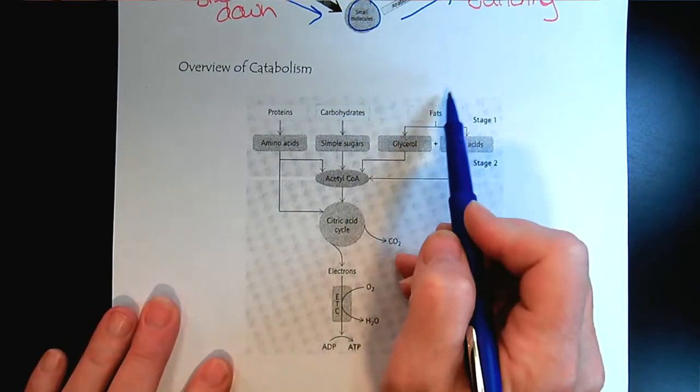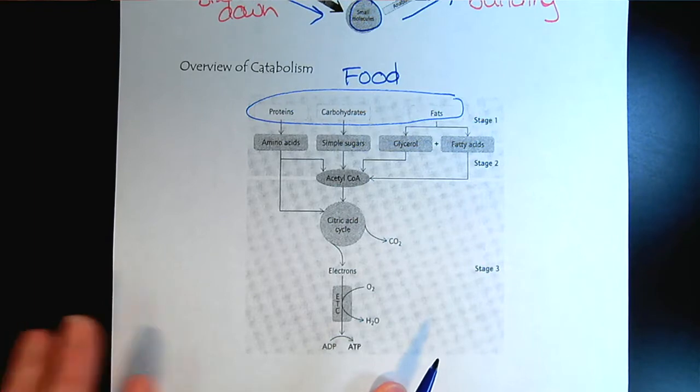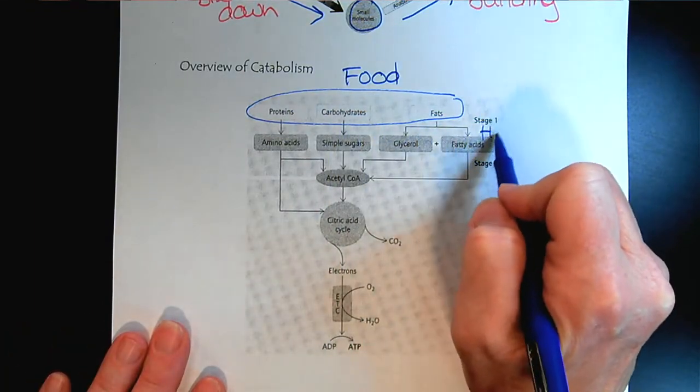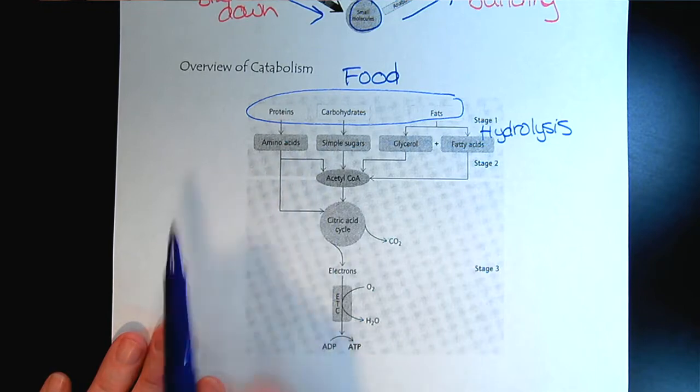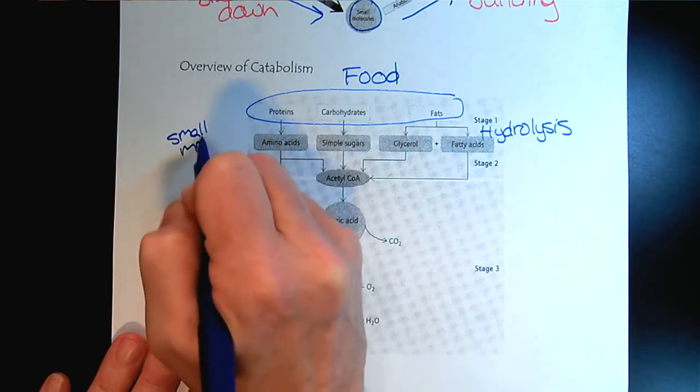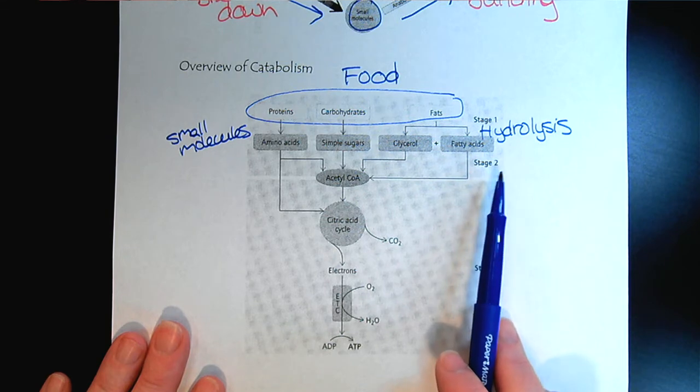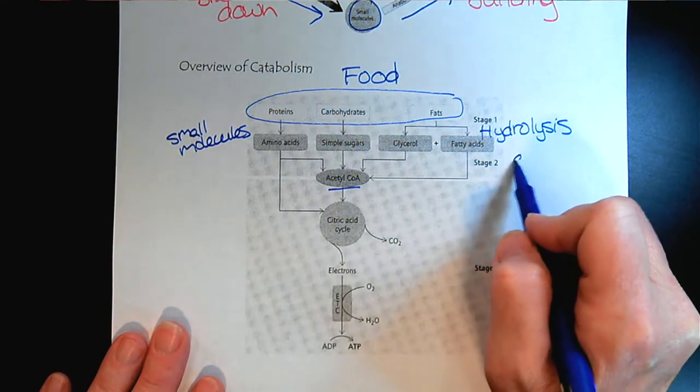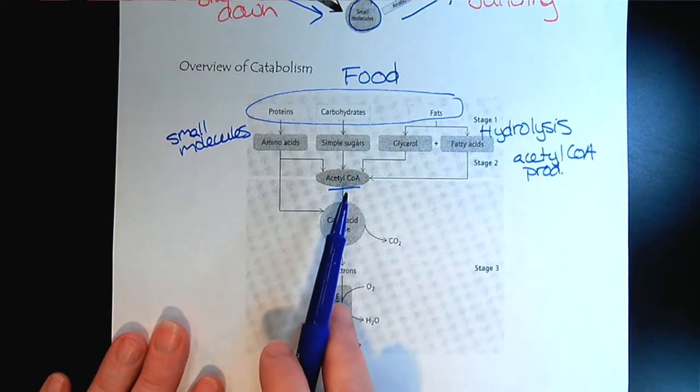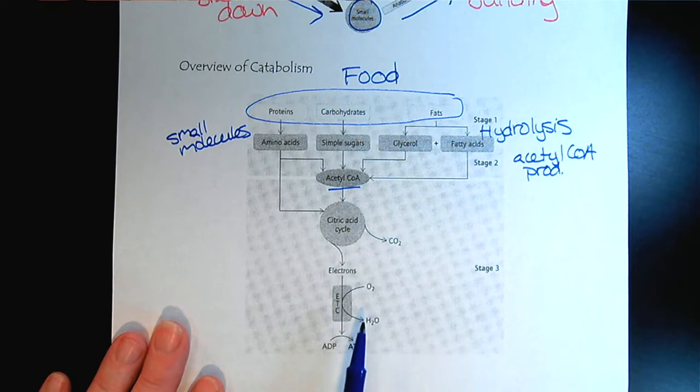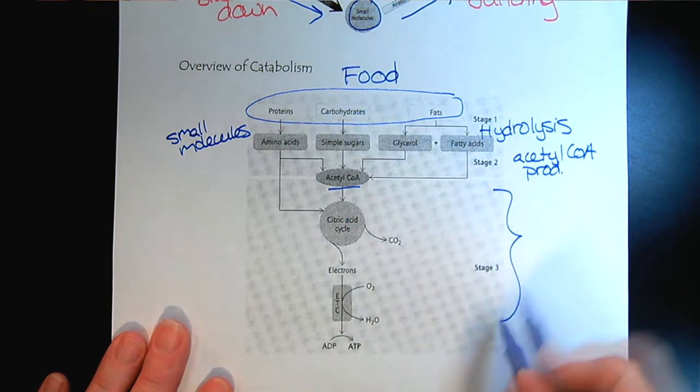When we look here, we recognize proteins, carbohydrates, and fats as our food. This first stage of catabolism is going to be hydrolysis. We will use water and various enzymes to break down our food into these small molecules. Then we will break them down even further. In the second stage of catabolism, we can think of this as acetyl-CoA production. Notice that all roads lead to acetyl-CoA because then it feeds into the citric acid cycle, the electron transport chain, and oxidative phosphorylation, which is then really where we get the energy production.